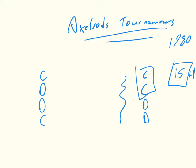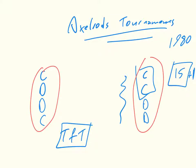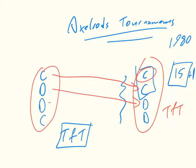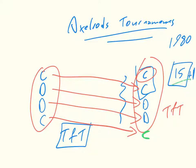But the strategy that won is called tit-for-tat. Tit-for-tat simply repeats what the opponent does. Looking at these two histories here, this strategy is in fact playing tit-for-tat — it starts by cooperating, and then just plays the opponent's previous move. So the next move would be a cooperate. In this very complicated tournament with 16 strategies, every strategy played everyone else for 200 turns, and tit-for-tat won.